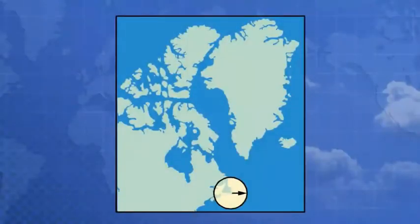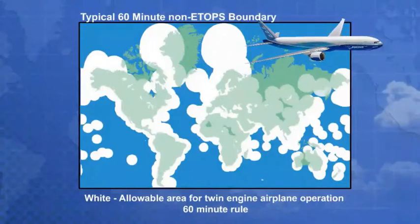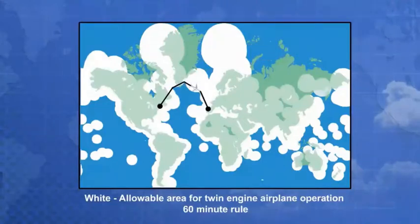Normally, a two-engine airplane must stay within 60 minutes single-engine flying time of an adequate airport. This rule restricts the area of operation and may result in increased route distance and fuel. For example, consider a New York to Madrid flight under the 60-minute rule.